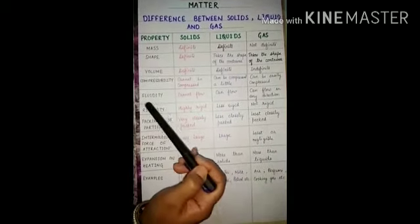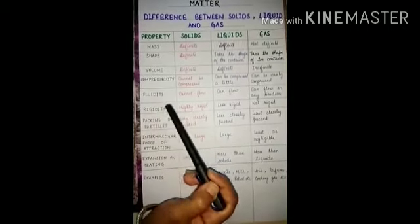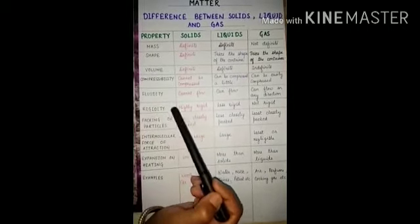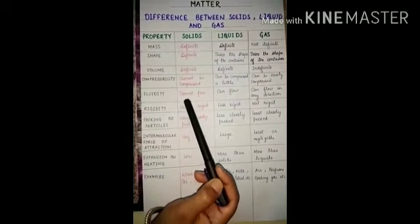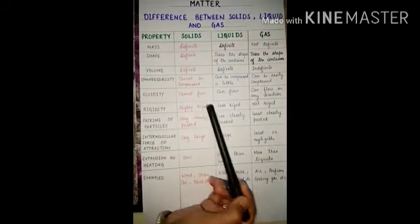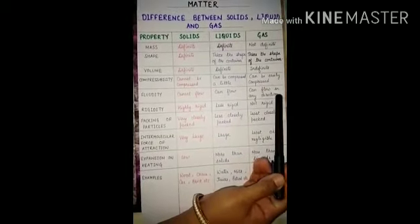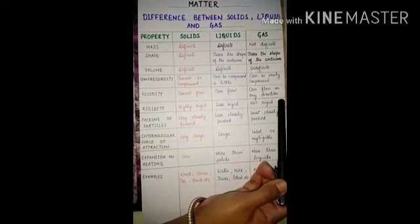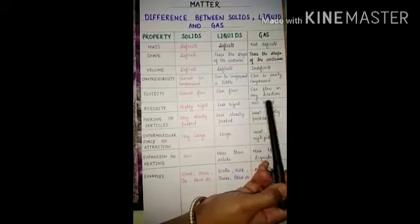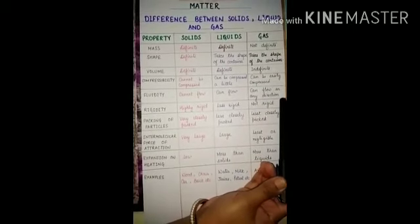The next property is fluidity, which means the tendency to flow. Solids cannot flow. Liquids can flow. And gases can flow in any direction — they move randomly in different directions.